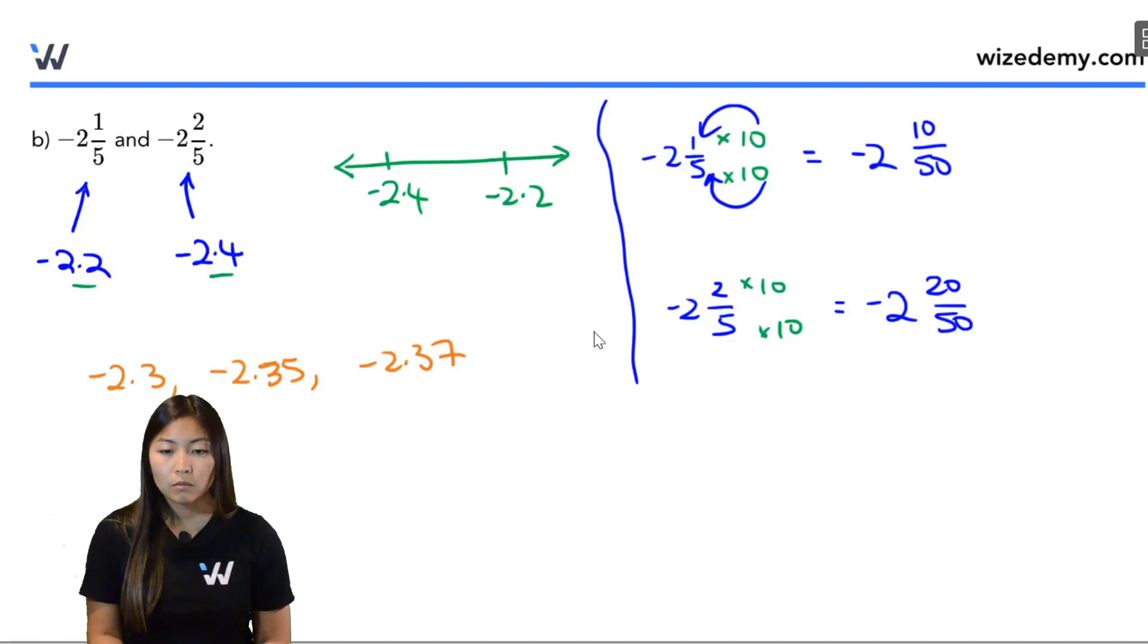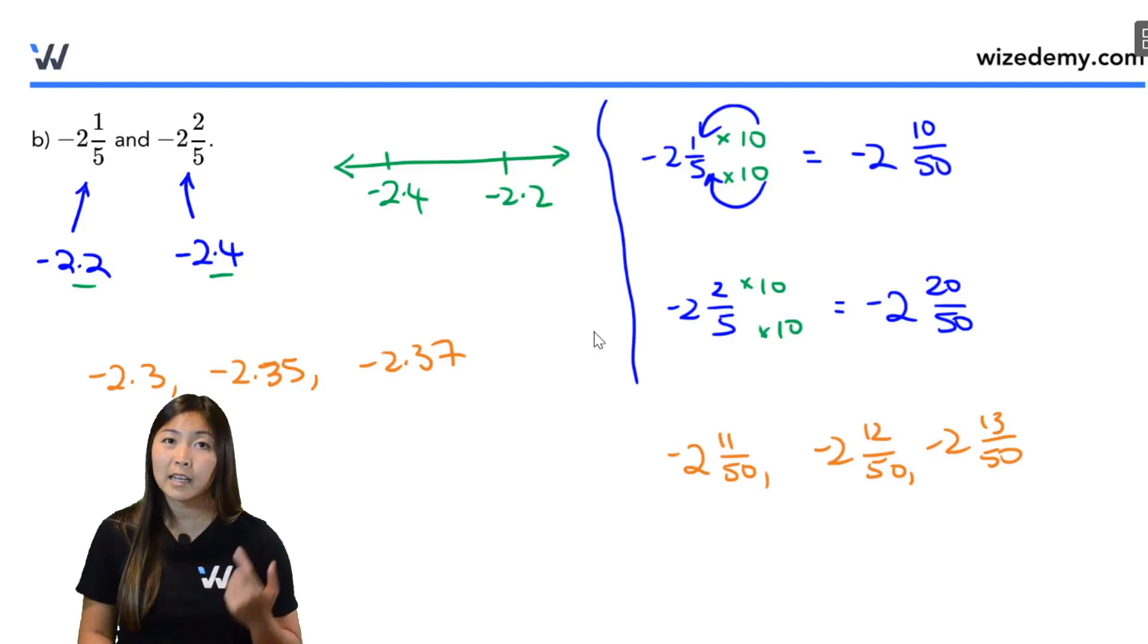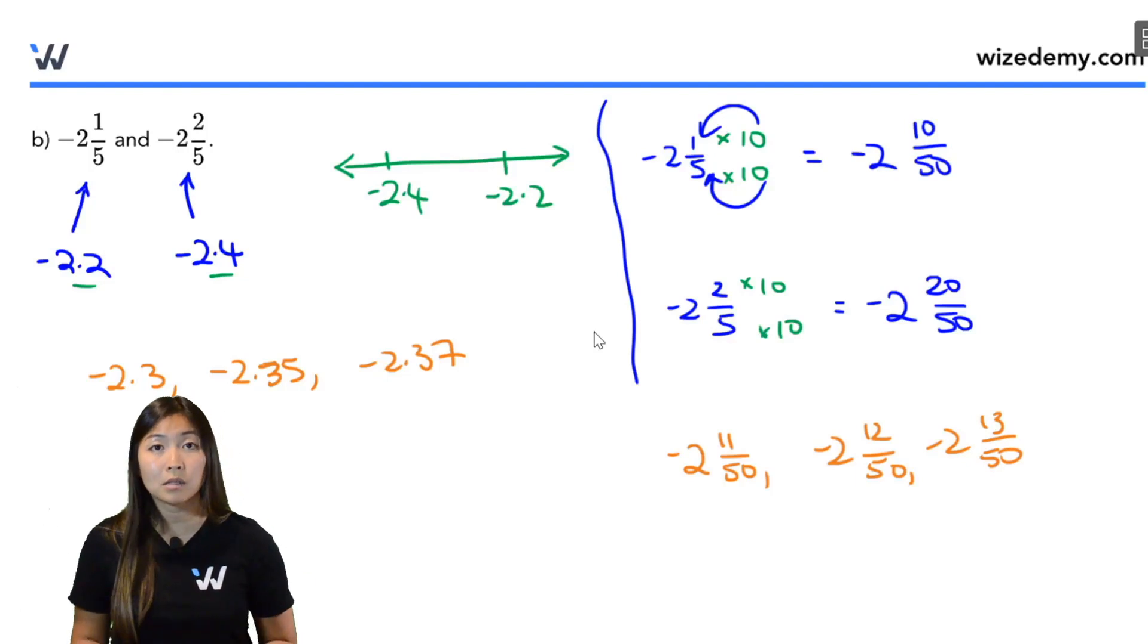So a couple examples are negative 2 and let's say 11 over 50, negative 2 and 12 over 50, and negative 2 and 13 out of 50. There's a lot more of these. You can go all the way up to negative 2 and 49 out of 50 and it would still work in this case.